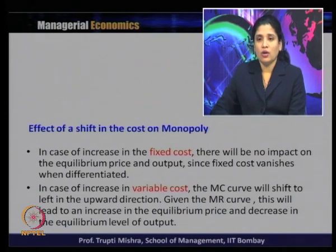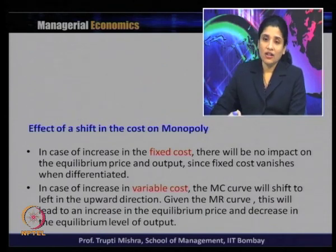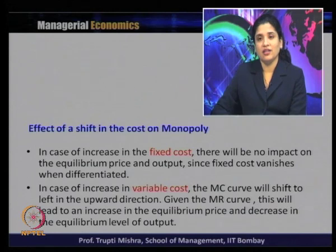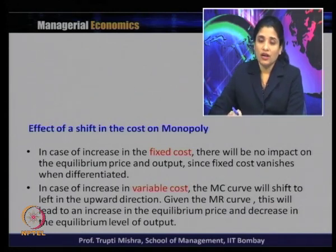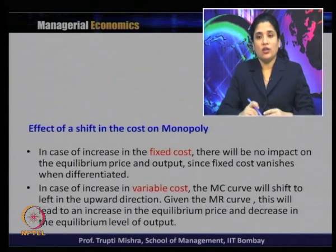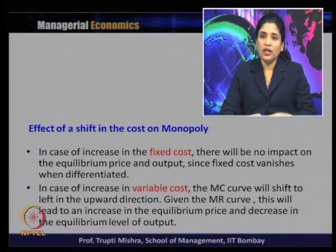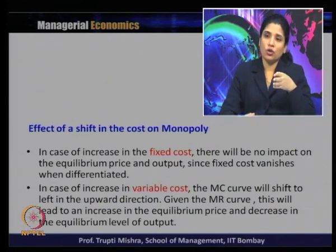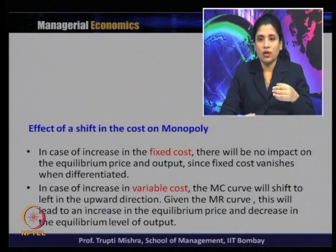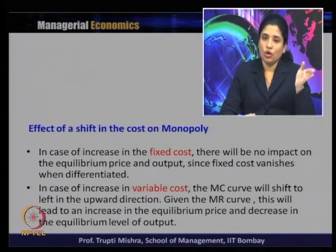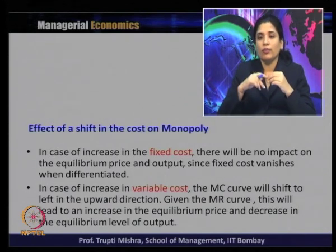In case of variable cost, the marginal cost curve will shift to the left in the upward direction. Given the marginal revenue curve, this will lead to an increase in the equilibrium price and a decrease in the equilibrium level of output. An increase in variable cost leads to a change in the marginal cost curve, shifting it upward, and that leads to a new equilibrium with higher price and lower output.